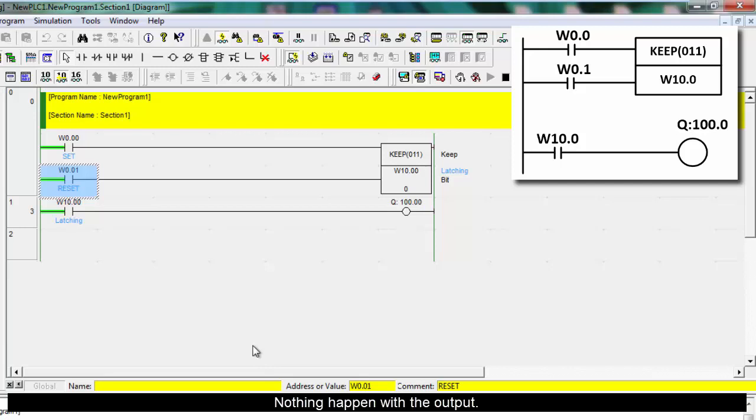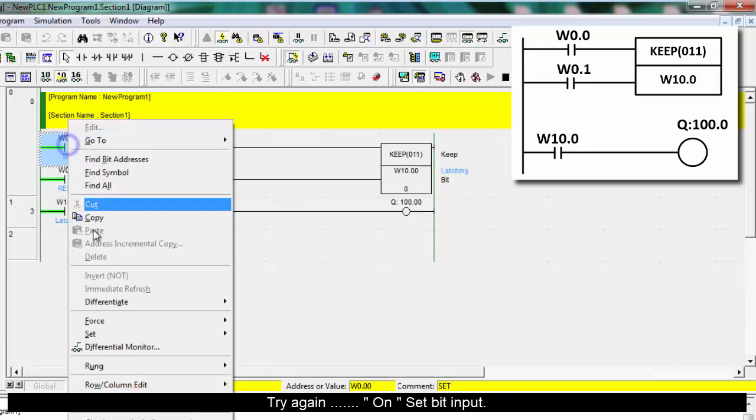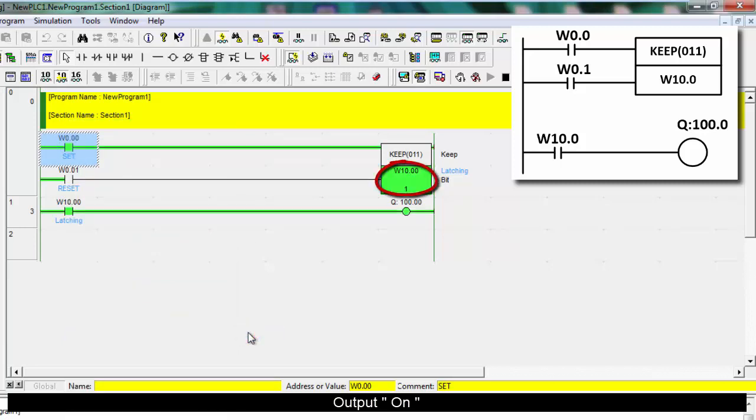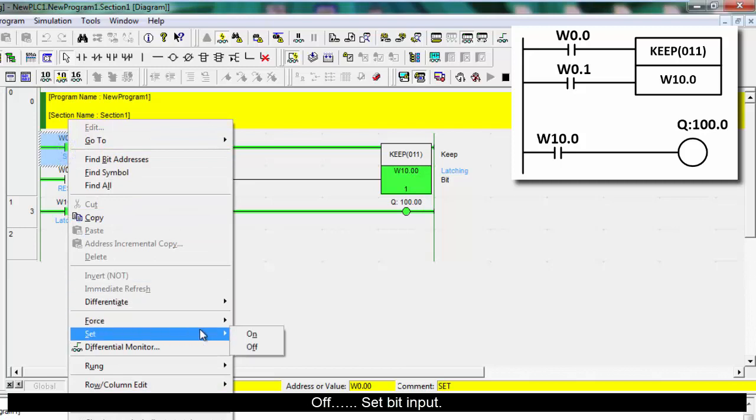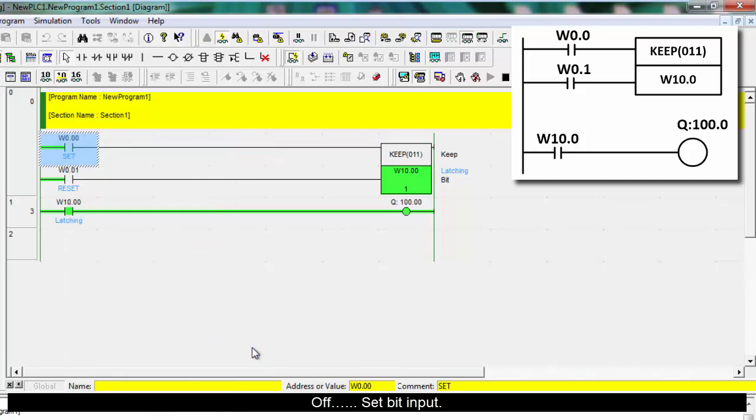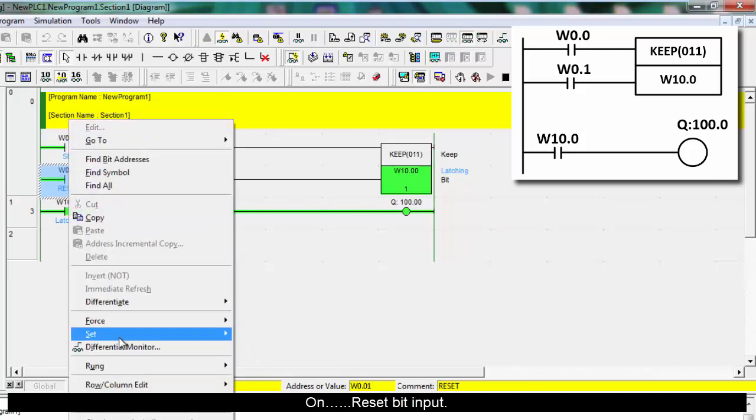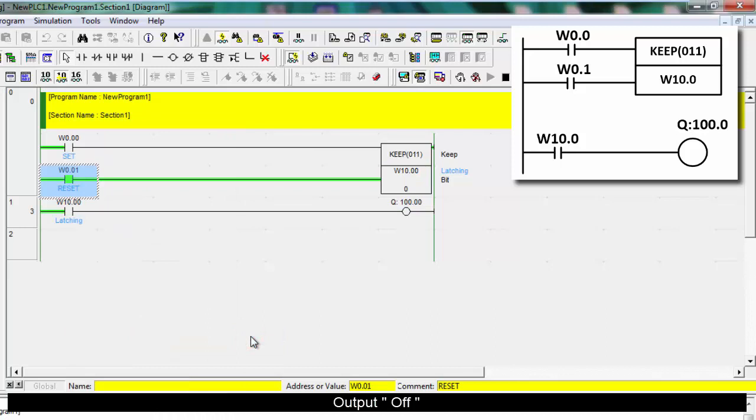Nothing happen with the output. Try again, on set bit input. Output on. Off set bit input. Output still on. On reset bit input. Output off.